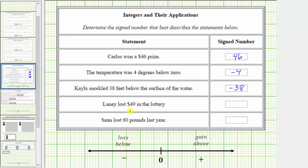Next, Lancey lost $49 in the lottery. Because Lancey lost $49, negative 49 best represents the loss of $49.